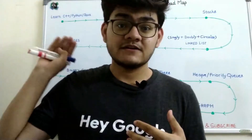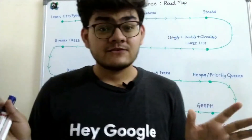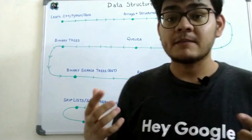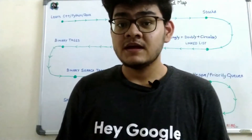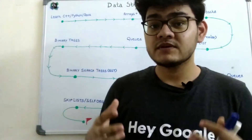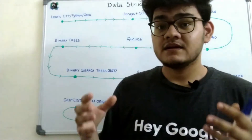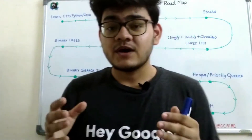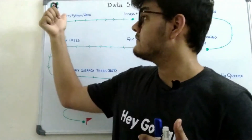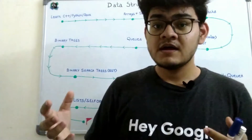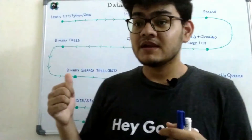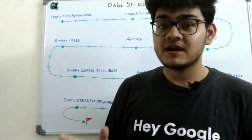Let's begin with the first part — the data structures roadmap. First, you will have to learn a particular programming language. It can be C++, Python, or Java — it's completely your choice. I started with C++ and most of the resources I will discuss are written in C++. I will also share resources on C++, Python, and Java so that if you are a complete beginner you can learn from there.